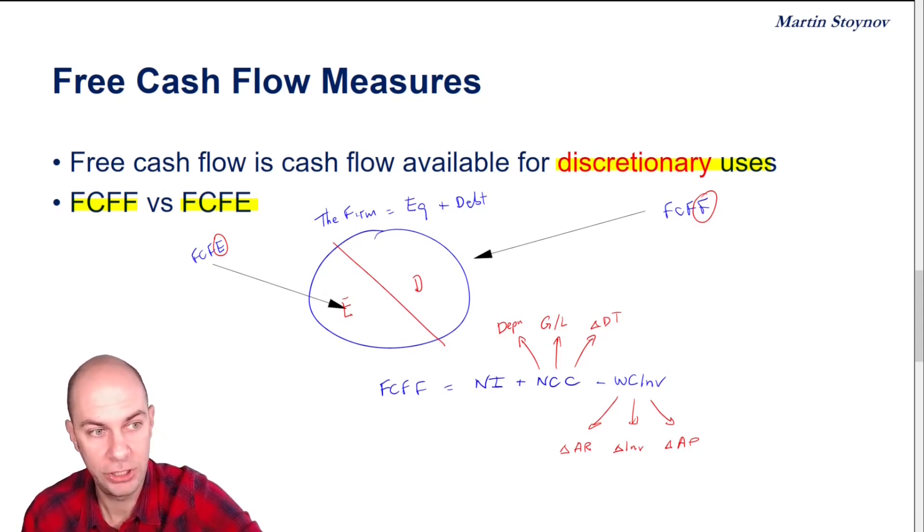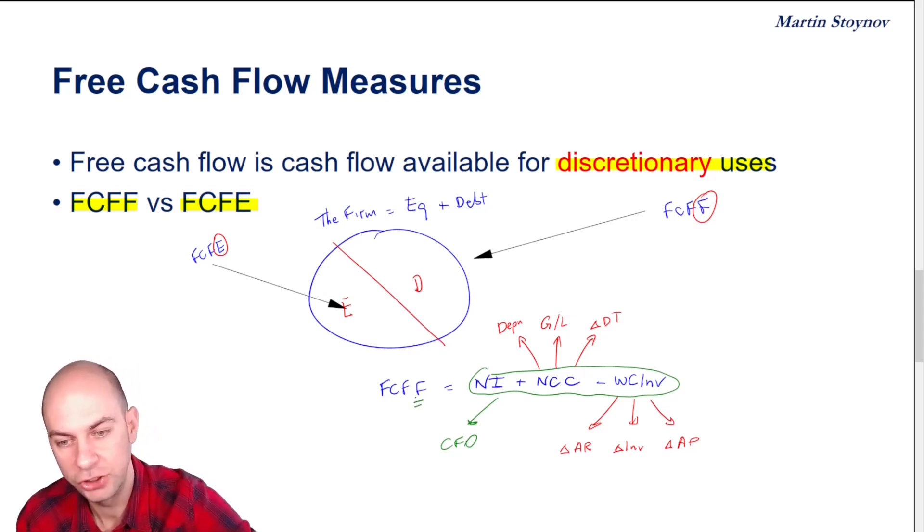And already here, you can notice that these three items represent what's known as the indirect methodology to obtaining our cash flow from operating activities. But we notice here that we're looking at free cash flow to the firm, not the equity.